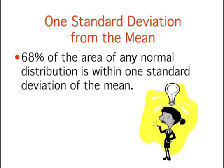The two normal distributions you just saw are specific examples of the general rule that 68% of the area of any normal distribution is within one standard deviation of the mean.